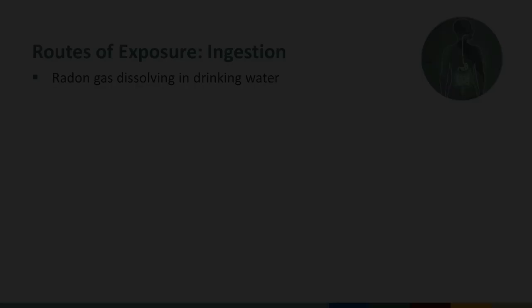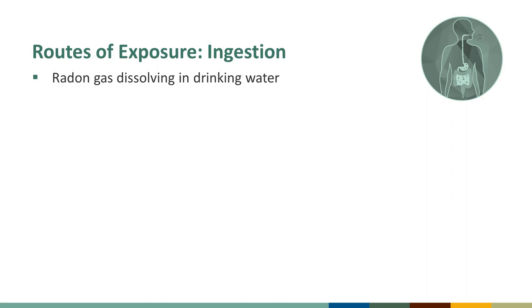Exposure to radon through ingestion can occur as a result of radon gas dissolving in drinking water. Water that contacts rocks and soil will contain dissolved radon, so in most drinking water, radon is naturally present. Some radon swallowed in drinking water passes through the stomach walls and intestine into the bloodstream. After radon reaches the lungs, it is readily breathed out through the pulmonary circulation; therefore, ingestion is a minimal exposure route. Data are very limited regarding the absorption of radon following dermal exposure, and this is not considered a significant exposure route.